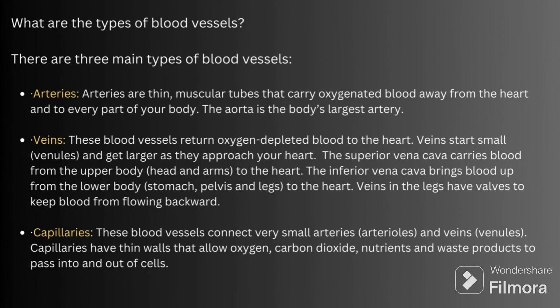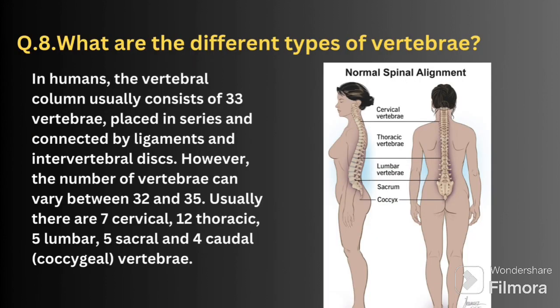There are three main types of blood vessels: arteries, veins, and capillaries. Arteries are thin muscular tubes that carry oxygenated blood away from the heart to every part of your body. Veins return oxygen-depleted blood to the heart; the superior vena cava carries blood from the upper body to the heart, while the inferior vena cava brings blood from the lower body. Capillaries are tiny blood vessels connecting arteries and veins, with thin walls that allow exchange of oxygen, carbon dioxide, nutrients, and waste products.